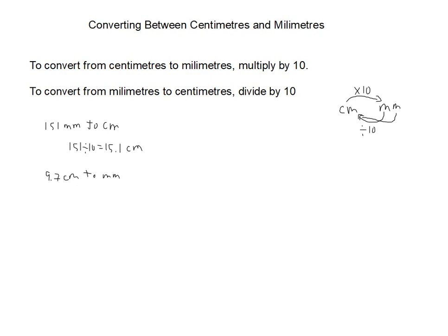Now again, we're going to use this little chart here. If I'm going from centimeters to millimeters, I need to multiply by 10. So let's go ahead and do that. So we'll take 9.7, multiply by 10, and we get 97.